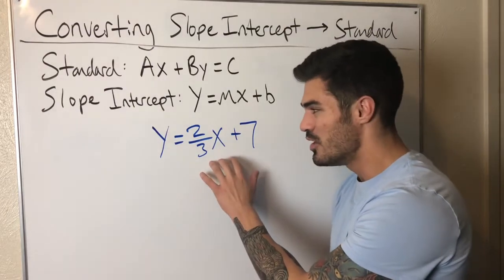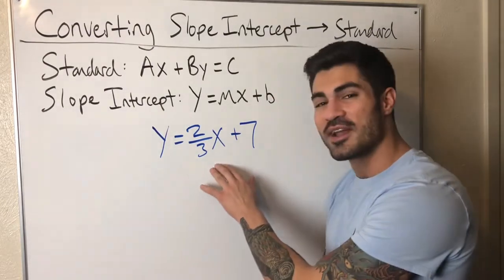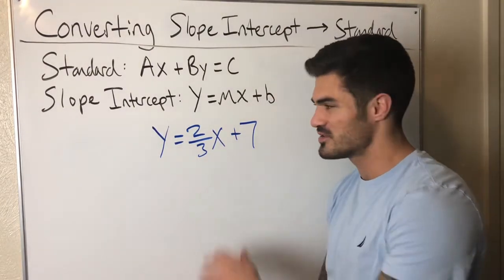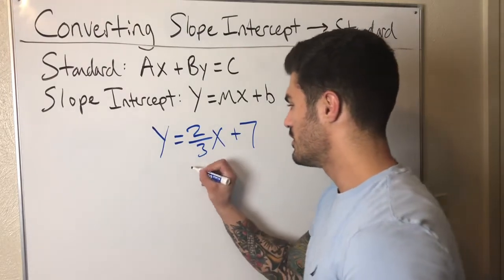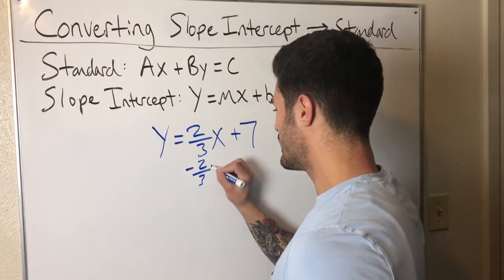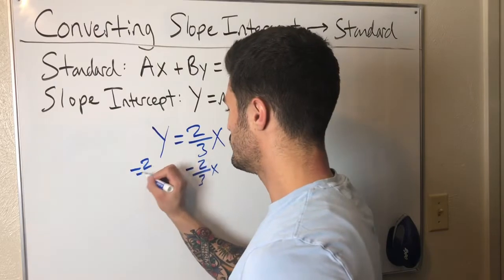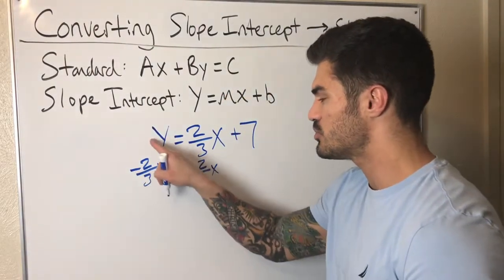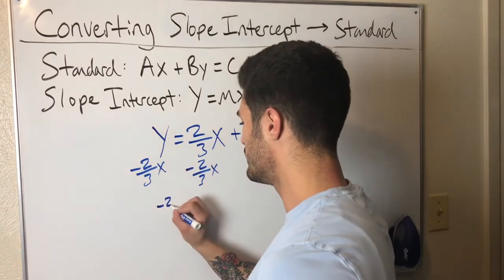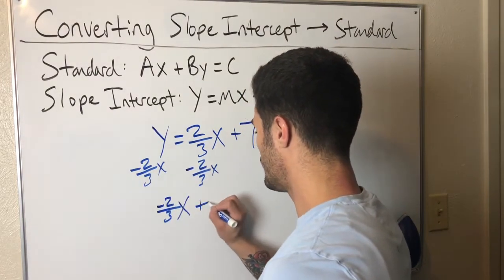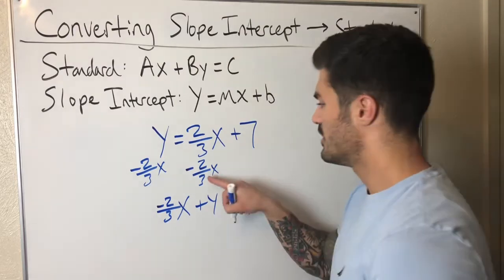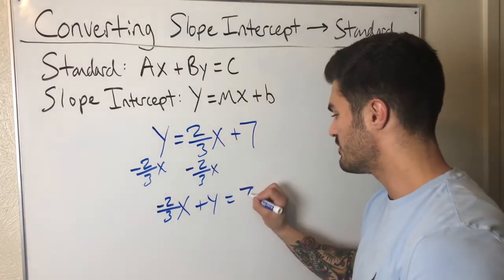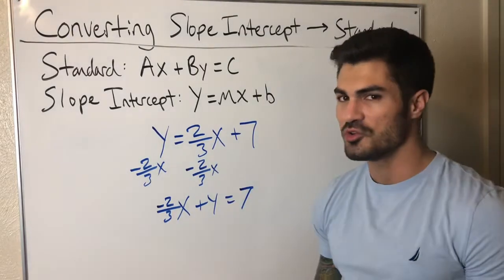Like look at this example, we can move this x over by subtracting both sides by two-thirds x. So I'm going to go ahead and do that. Minus two-thirds x to both sides, minus two-thirds x, and I'm left with what? Negative two-thirds x plus y on the left-hand side. Negative two over three x plus y equals, these cancel and I'm just left with seven.